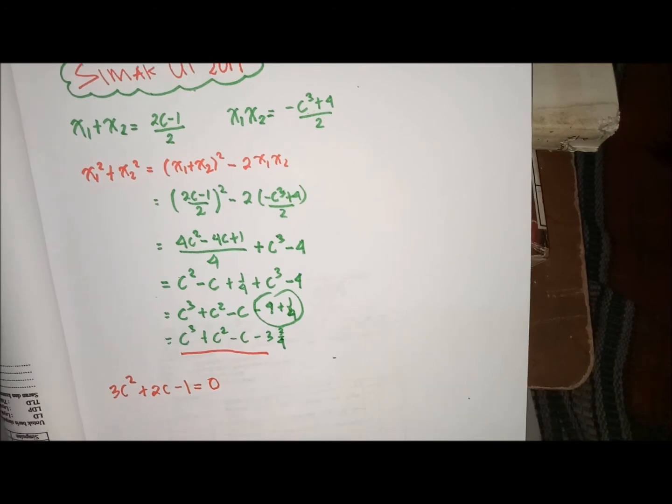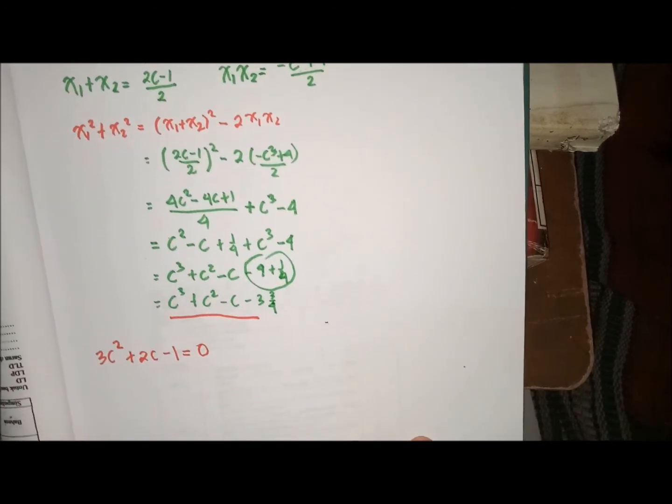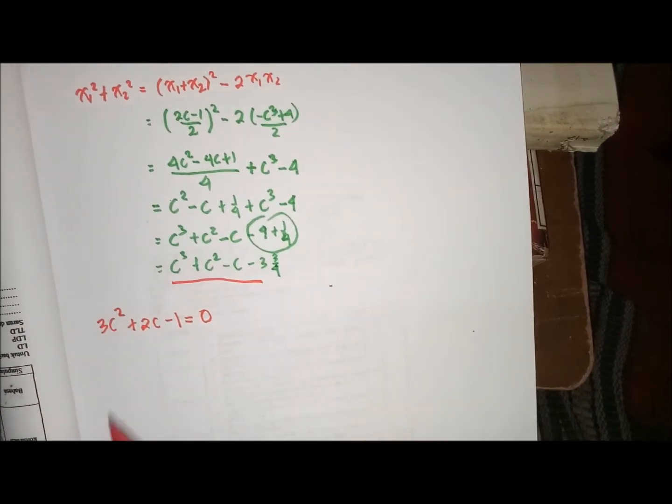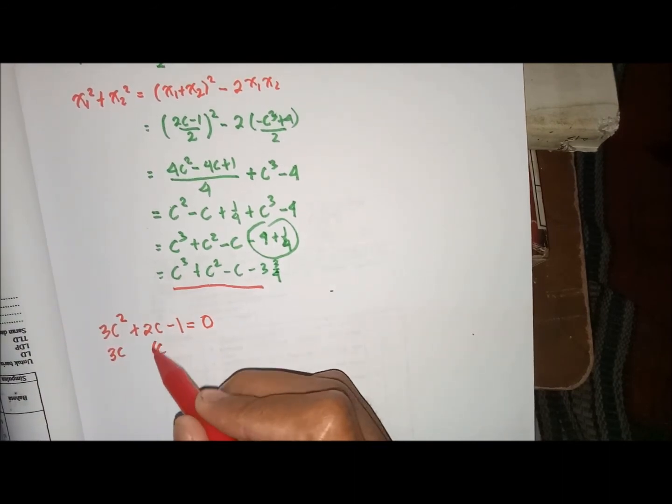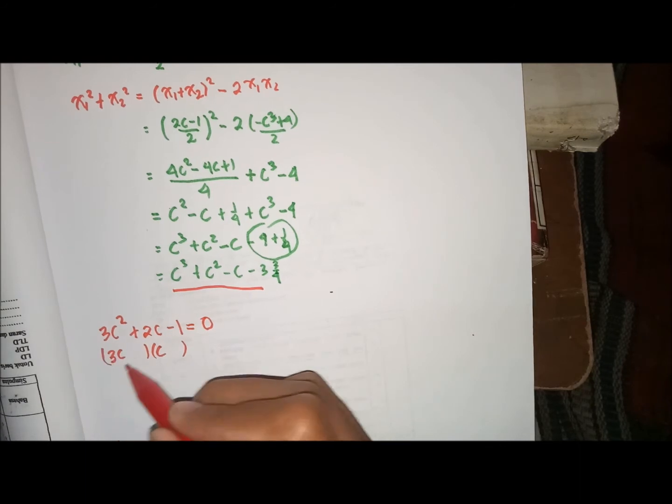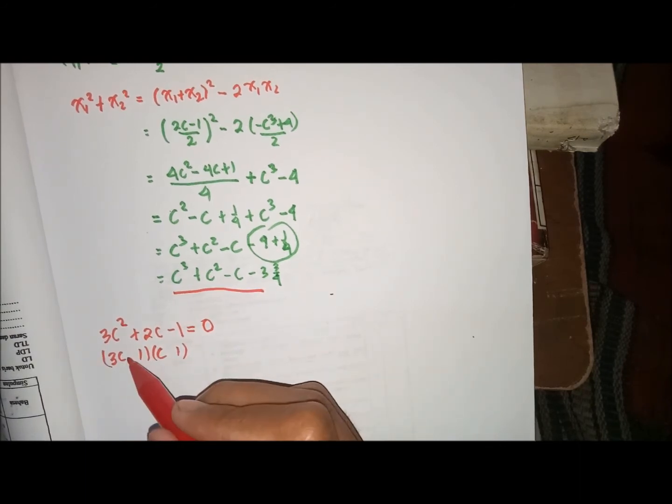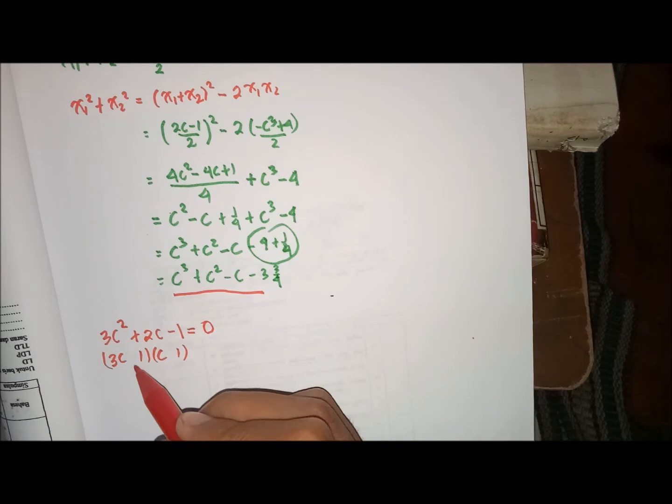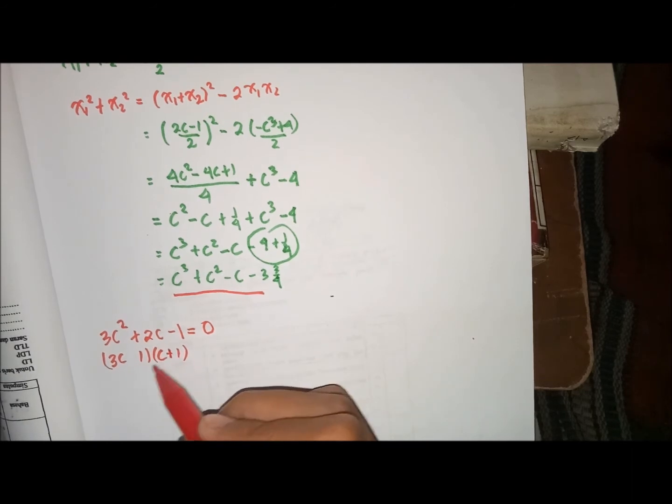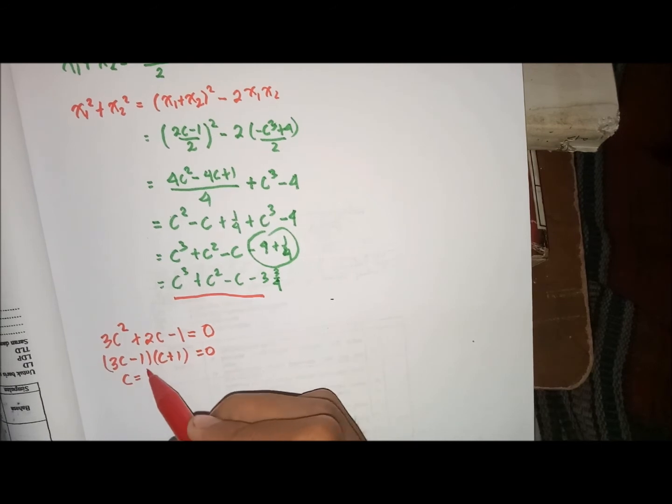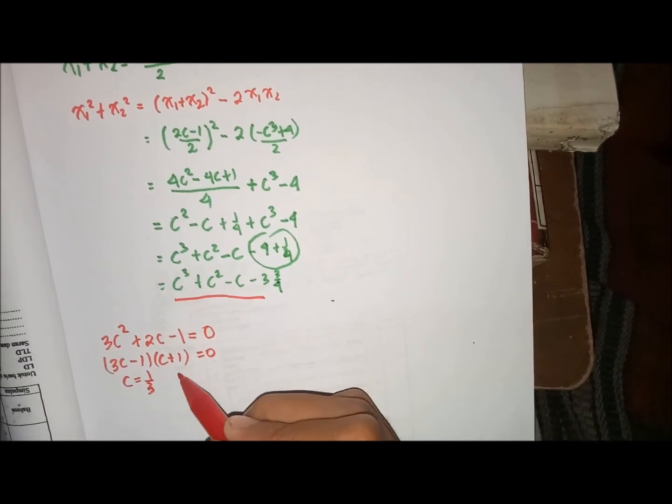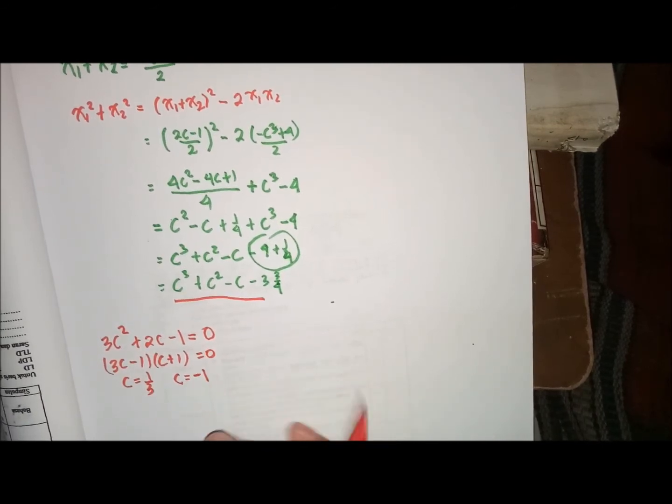Sehingga bisa dapatkan ini difaktorkan, jadinya adalah 3C, C, pasti ini 1, 1. Kemudian di sini adalah plus, di sini min. Sehingga C sama dengan 1 per 3, C sama dengan min 1.